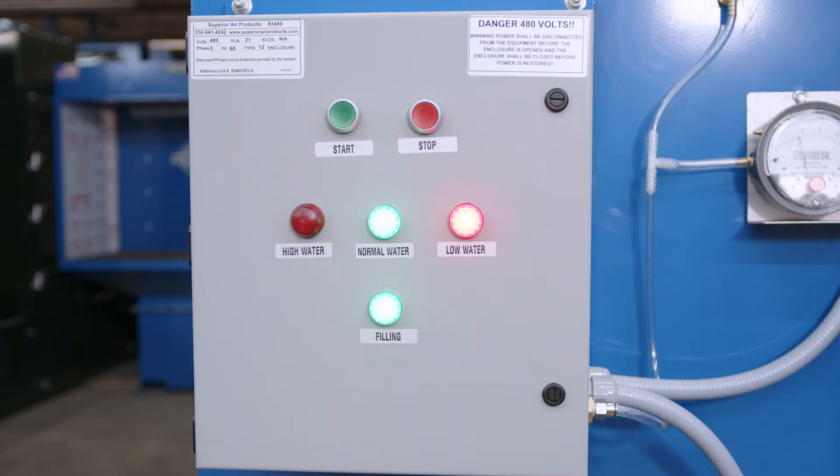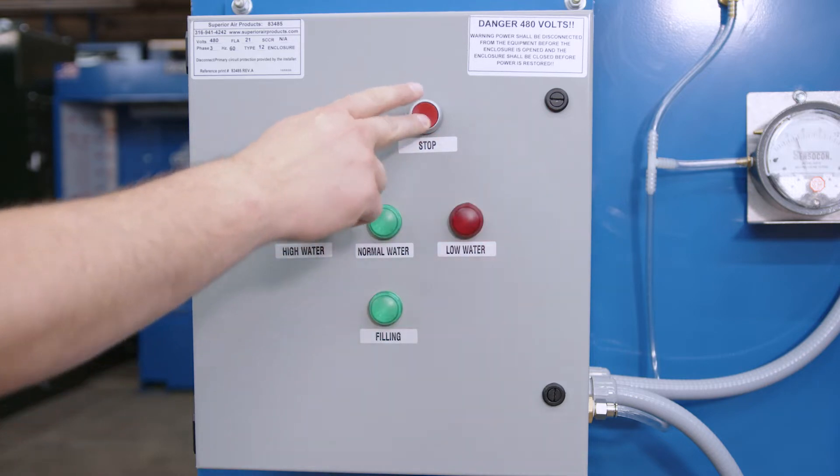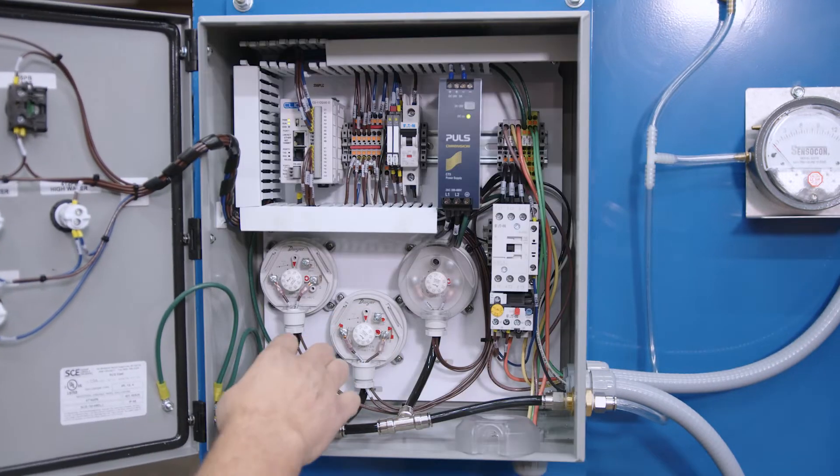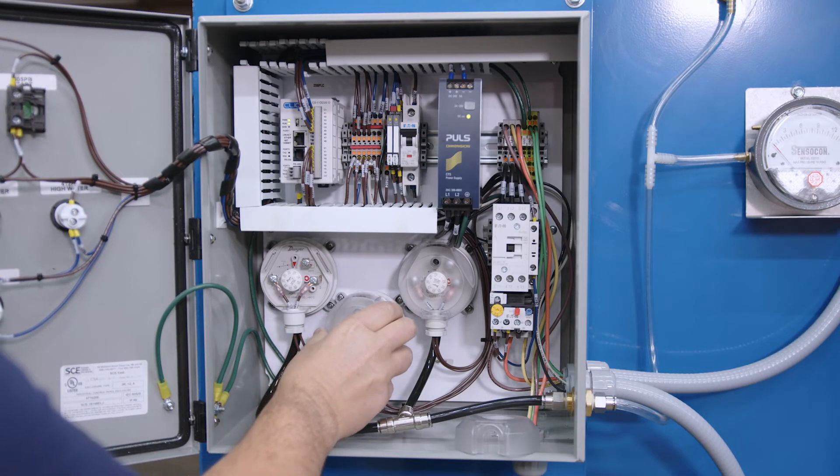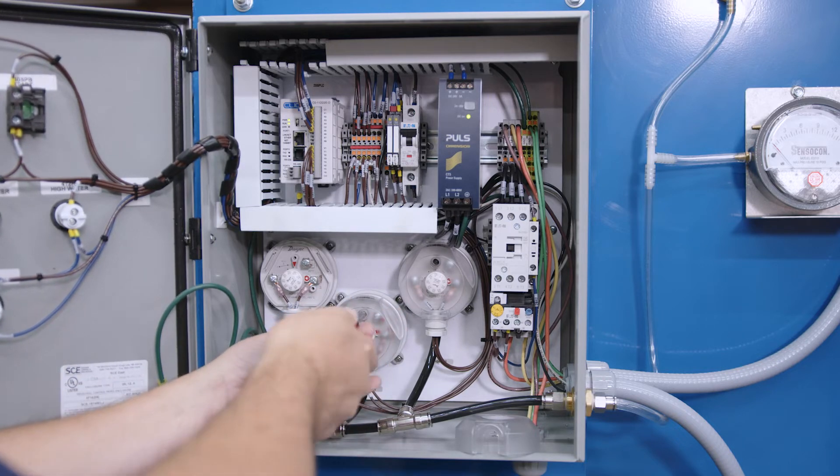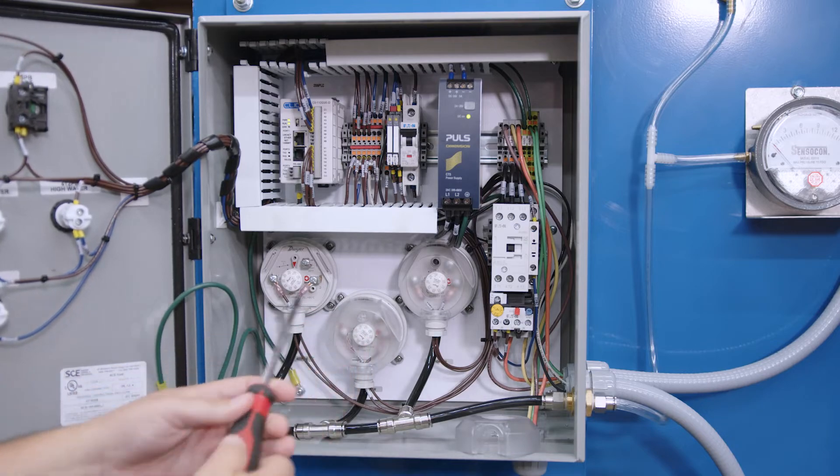This would signify a situation where water levels are not satisfactory to ensure proper operation. The middle or nominal pressure switch is the level that dictates the water level the unit will normally operate at. Each of these switches is preset during factory testing but can also be set in the field at another desired level of operating parameters.